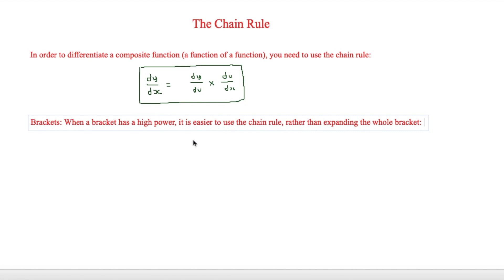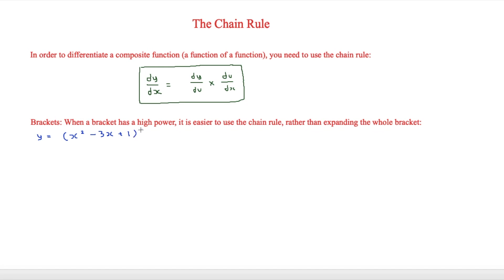First of all, we need to look at brackets. When a bracket has a high power, it is easier to use the chain rule rather than expanding the whole bracket. An example we could give is y equals x squared minus 3x plus 1, all to the power of 5.